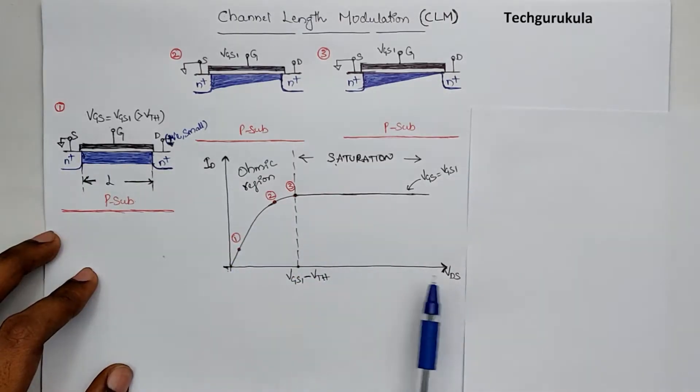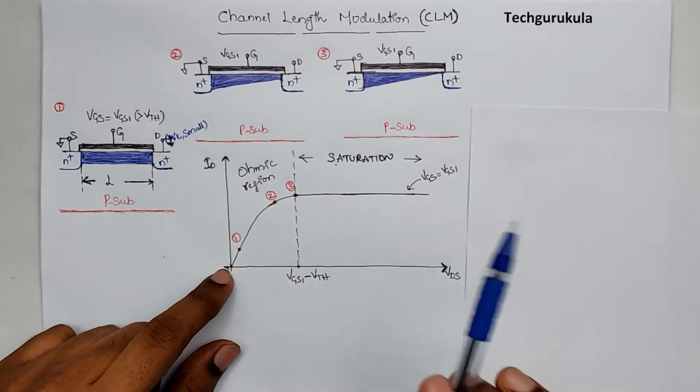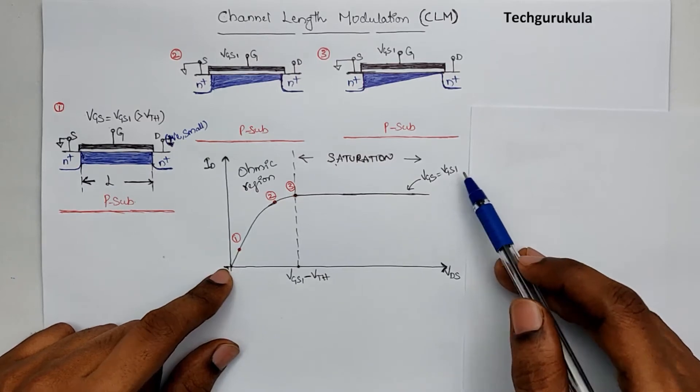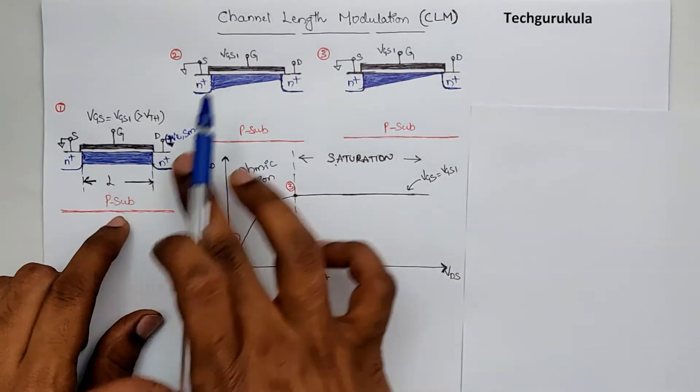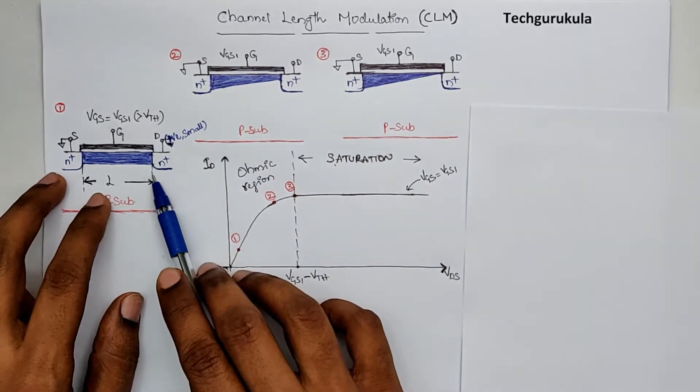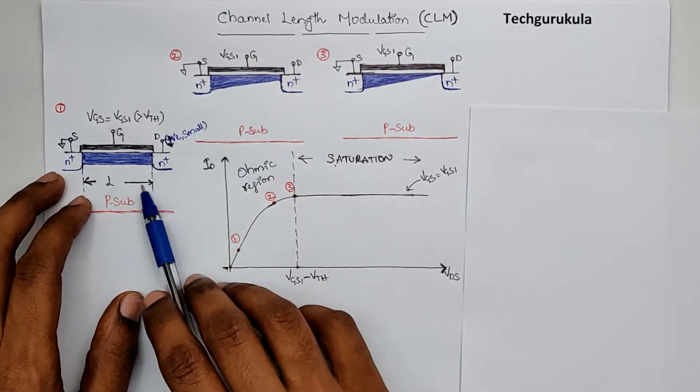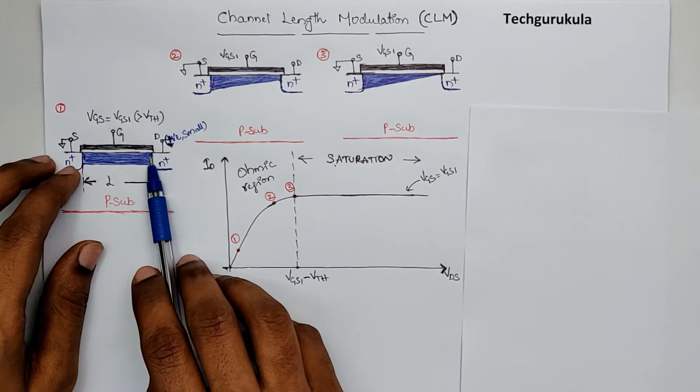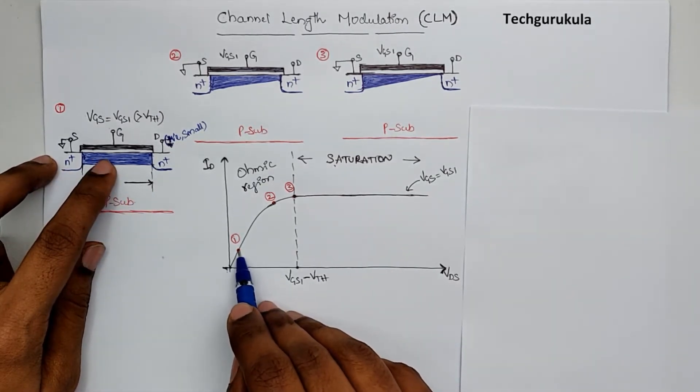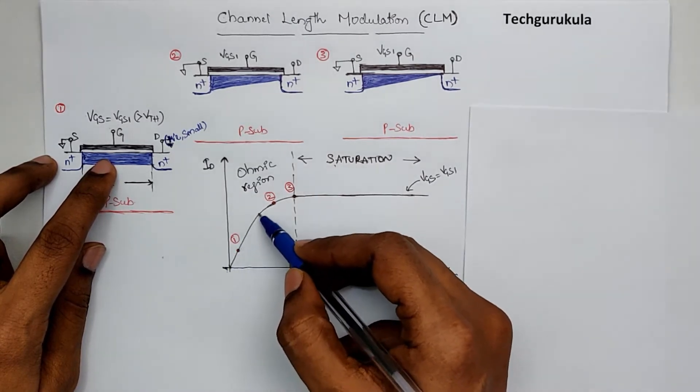This is how the ID versus VDS characteristics of a MOSFET were when VGS was equal to a constant value, let's say which is VGS1. So I've drawn these figures, taking VGS is fixed which is VGS1, and the first figure represents when VDS is positive and it is small. So in that case we had the entire channel and the current that was flowing was somewhere here for the given VDS, which is very small, and the current was increasing linearly.